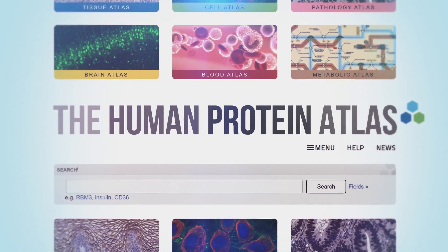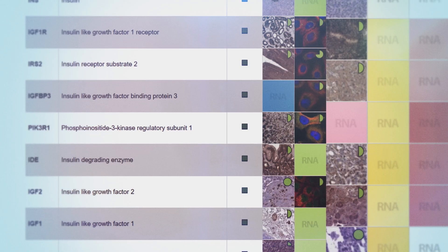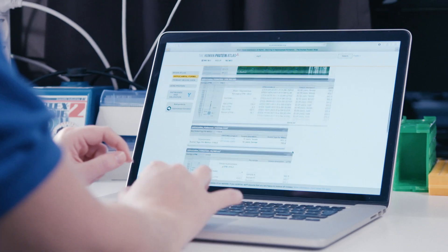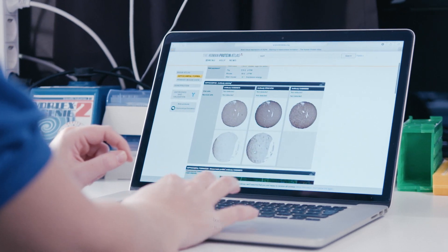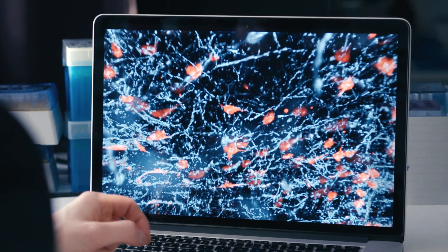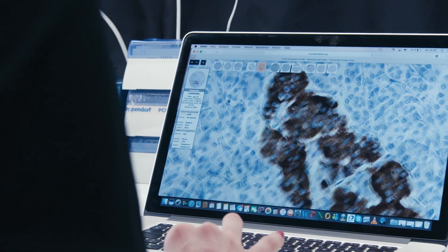The Human Protein Atlas database is a resource encompassing all proteins in the human body allowing researchers to explore the complex network of these molecules and this unique resource is open to everybody. Every day thousands of scientists are using this information to explore the molecular universe of our bodies gaining deeper insights in the involvement of proteins in human biology and diseases.